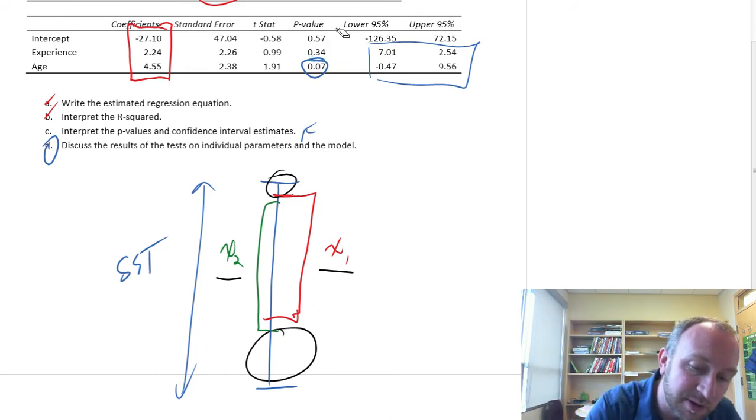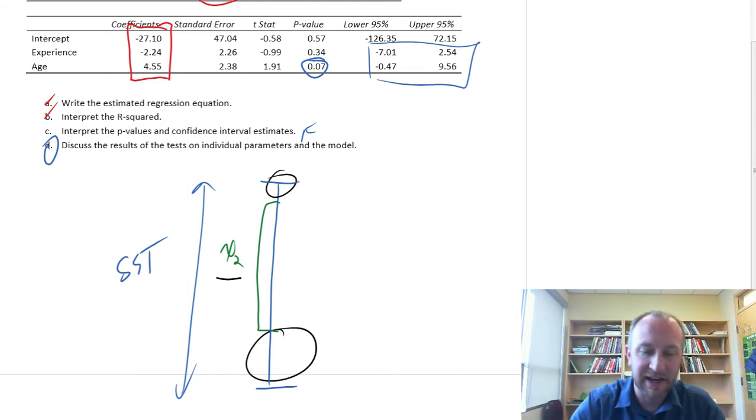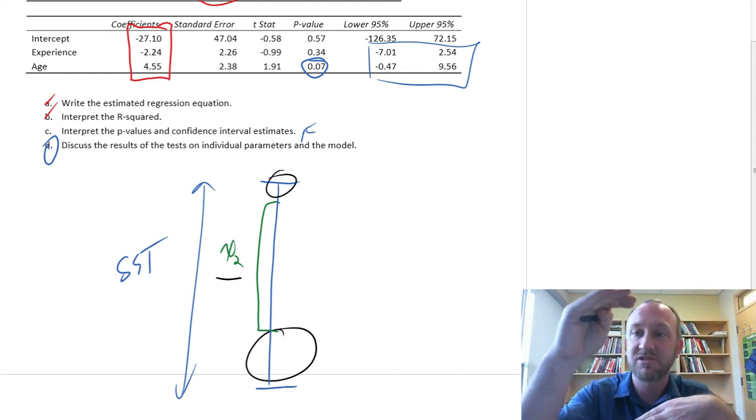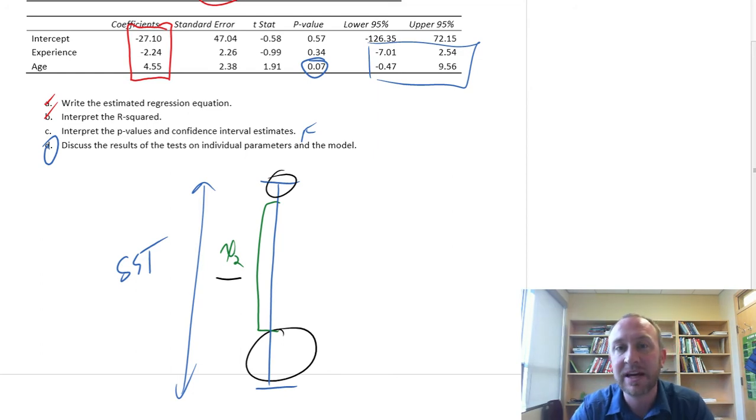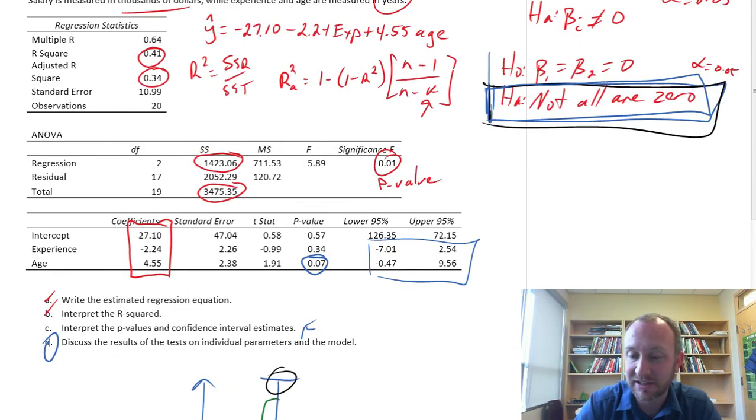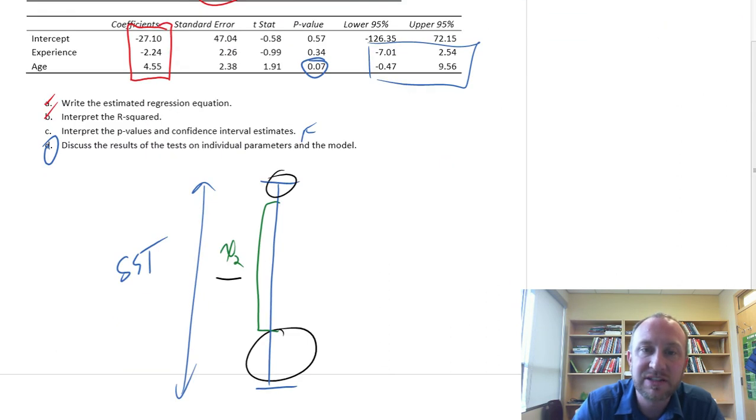So what this means is we're probably better off eliminating one of those independent variables. And generally, we would start with the one that has the highest p-value. So here we would get rid of experience, which was our X1. And so with that one gone, X2 would be left. X2 is still capturing all of that same variation. And I'd be willing to bet, based on these results, especially based on that F-test, that statistical significance is there. If we were to redo the regression with just age left in the model, that p-value would suddenly fall. Probably something close to zero.